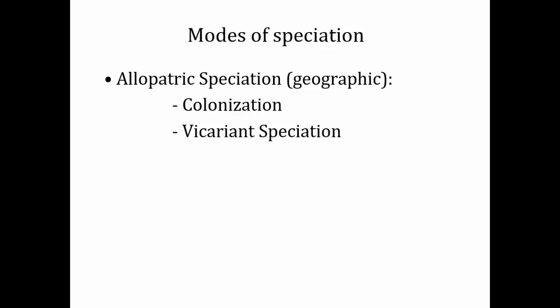Another form of speciation is sympatric speciation. In sympatric speciation, the two species are formed in the same habitat. Review the activity and the book for this material.